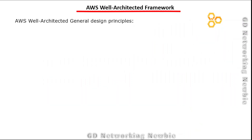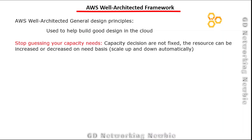Now, on this slide we have some general design principles of the AWS Well-Architected Framework. These are there to help build good design in the cloud. The first principle is to stop guessing your capacity needs — don't try to guess what your needs are, because you may be wrong. Sometimes you may subscribe for less resources, sometimes more. These decisions should be flexible, because cloud provides a basis by which we can automate and scale up or scale down those resources as required.